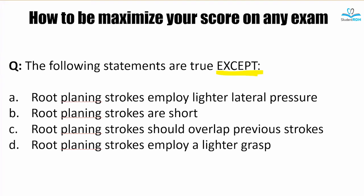So A — the strokes should be lighter with lateral pressure. True. Let's not jump to a conclusion; let's just play this game true or false. B — the strokes are short. Do we want short strokes or long strokes? Usually we want long strokes. Short, forceful strokes are used to remove tenacious calculus, so this is actually false. C — the strokes should be overlapping. Yes, true. D — the strokes have a lighter grasp. Yes, true. Now we have found our answer, which is B.